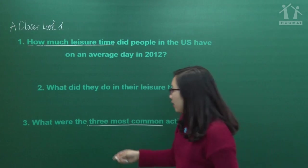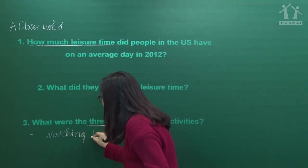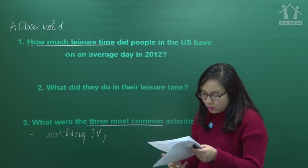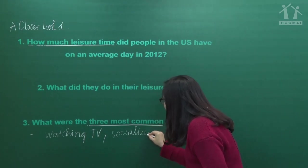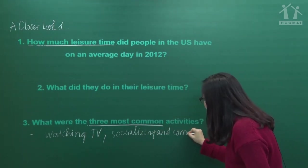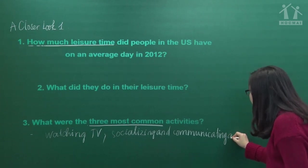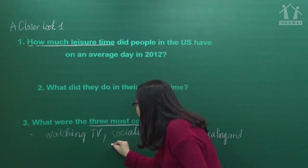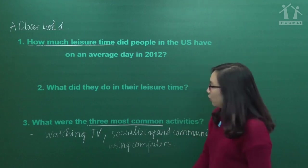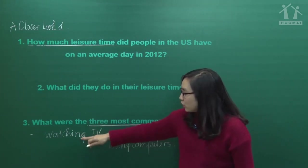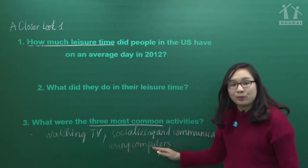So we can answer: the first is watching TV, the second is socializing and communicating, and the last is using computers. So the three most common activities are watching TV, socializing and communicating, and using computers.